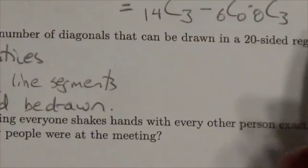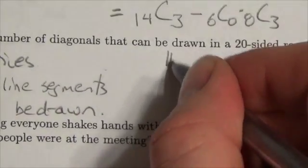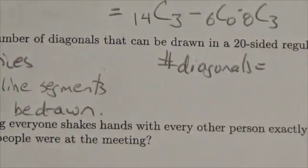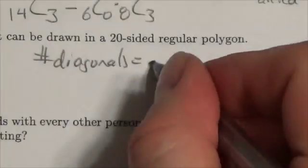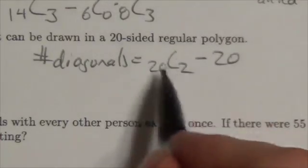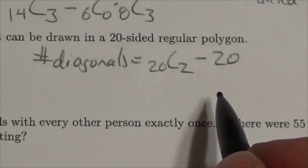then what that means is the number of diagonals is going to be 20 choose 2, and then we're going to subtract 20 because 20 of those combinations are going to actually count as sides, not diagonals.